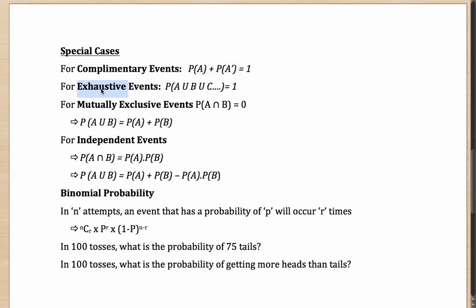What are exhaustive events? Exhaustive events are those which cover the entire gamut of possibilities. If there are seven people in a race and someone asks what is the probability of A union B union C union D union E union F union G — that is, one of them will win the race — well, if seven people are running, one of them has to win. Such events are exhaustive events, and the probability of the union of all of them will come out as one.